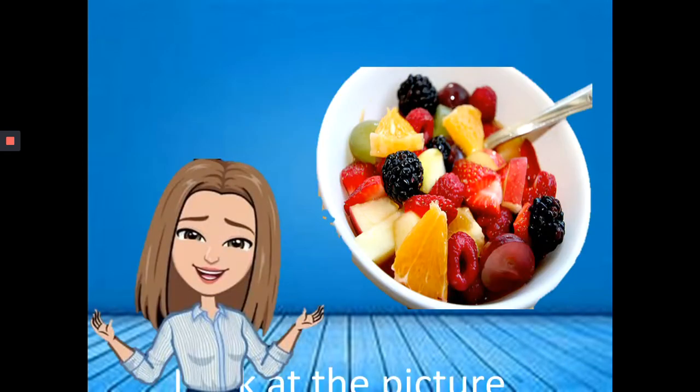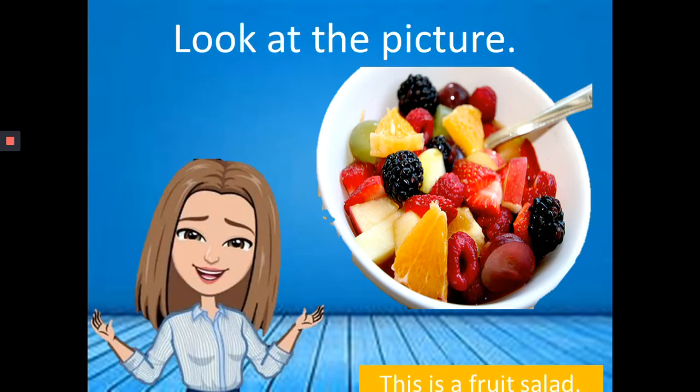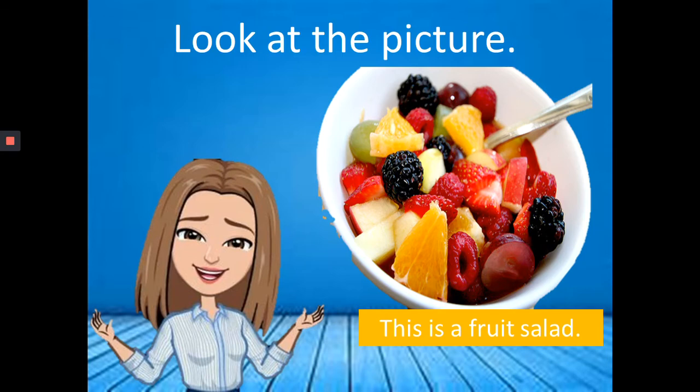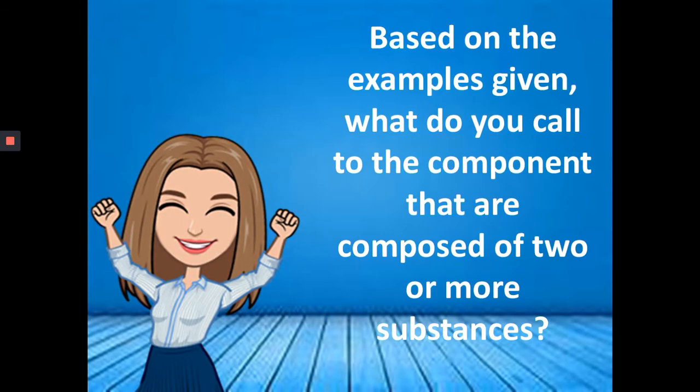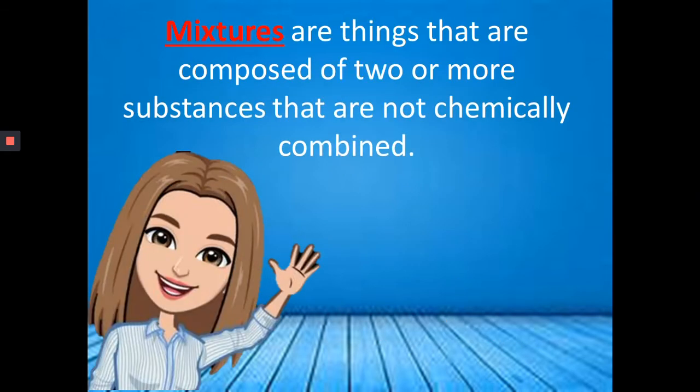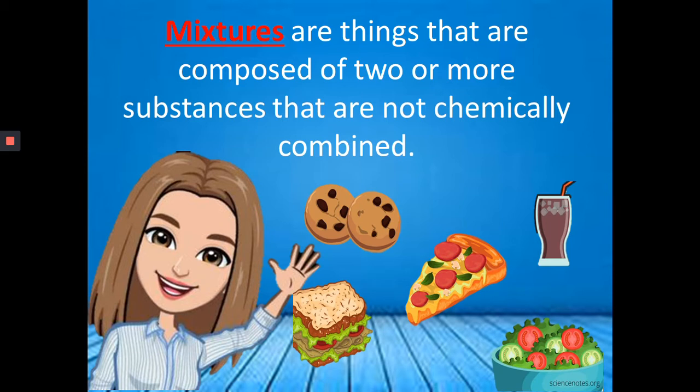Look at the picture. This is a fruit salad. Based on the example given, what do you call to the component that are composed of two or more substances? That is a mixtures. What do we mean by mixtures? Mixtures are things that are composed of two or more substances that are not chemically combined. Example are cookies, sandwich, pizza, soda, and salad.